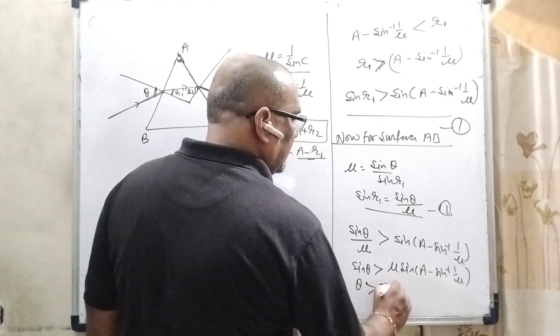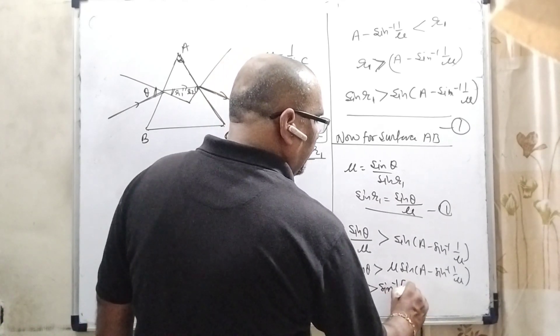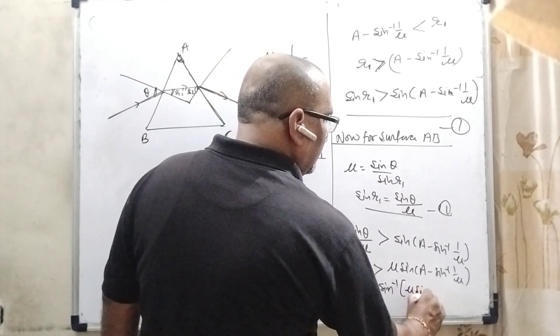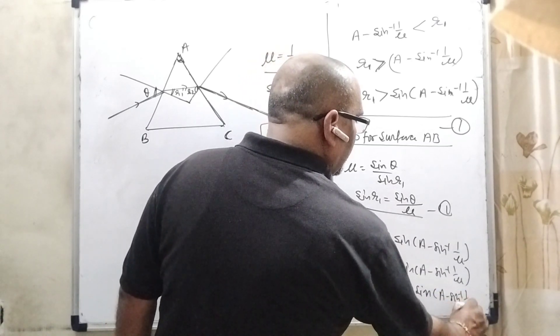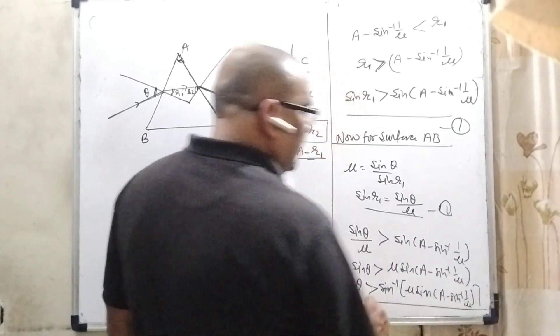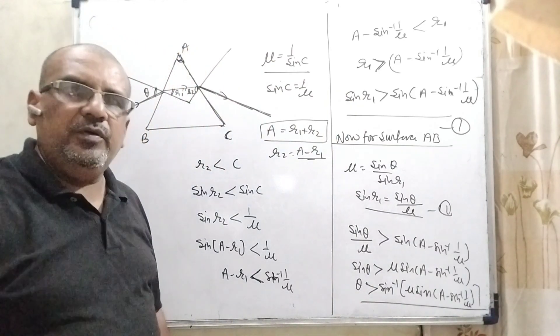Now this theta converted into inverse form because we have given all the options in the inverse form. So theta is greater than sin inverse mu sin into bracket A minus sin inverse 1 by mu. This is the final answer. I hope you understood this question.